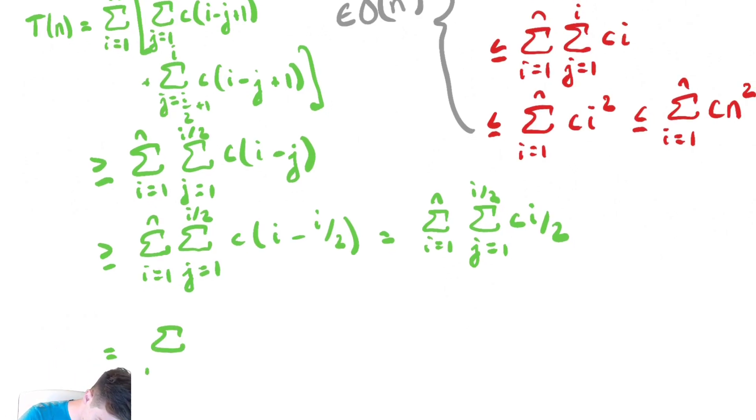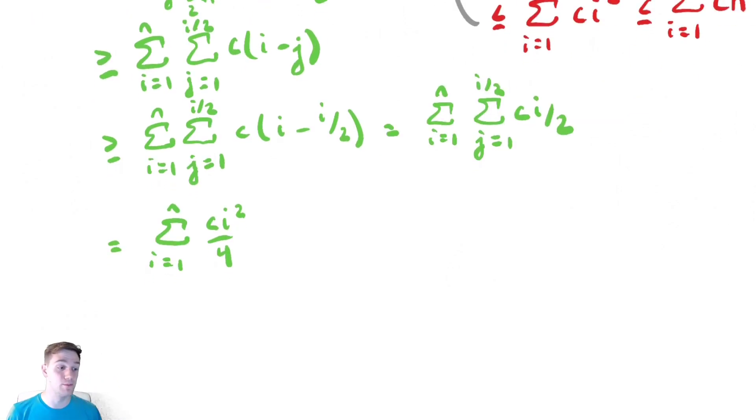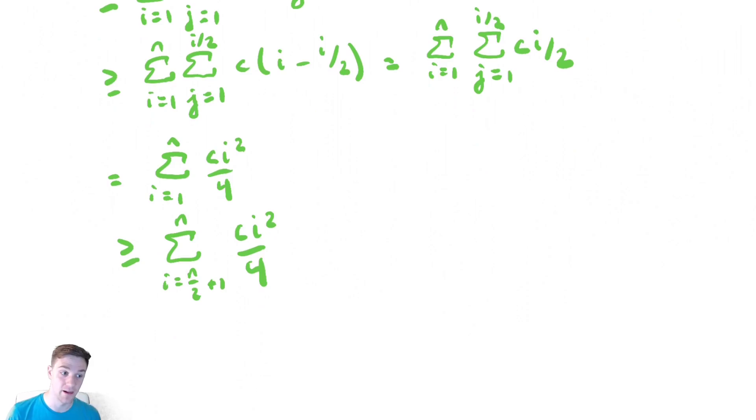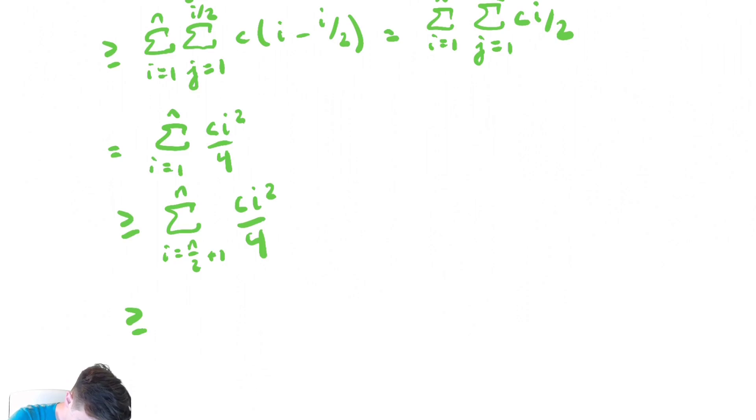It's equal to the sum from i equals 1 to n of, we have i over 2 terms of c i over 2, so that's c i squared over 4. Now let's try and get a bit better at doing these things sort of quickly. Let's try and drop half of the terms. I'm going to drop the first half of the terms because this is an increasing function of i, so I'm going to keep the sum from i equals n over 2 plus 1 to n of c i squared over 4, dropping that first half of the summation, similar to what we did up here, but we've done it more quickly. Now let's plug in a value of i that makes this convenient. One such value of i would be n over 2, sum from i equals n over 2 plus 1 to n of c times n over 2 quantity squared all over 4.